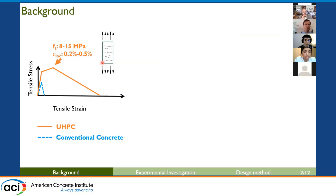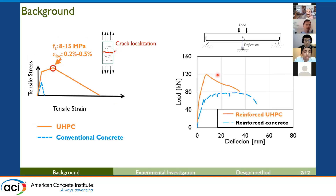First, let's briefly review UHPC material behavior under tension. Compared to conventional concrete, UHPC shows much higher tensile strength and strain capacity. After tensile cracking, UHPC shows tensile strain hardening behavior until cracks localize in the weakest plane, a phenomenon known as crack localization. Despite the higher material ductility of UHPC, reinforced UHPC beams often show early failure and lower structural ductility than reinforced concrete.